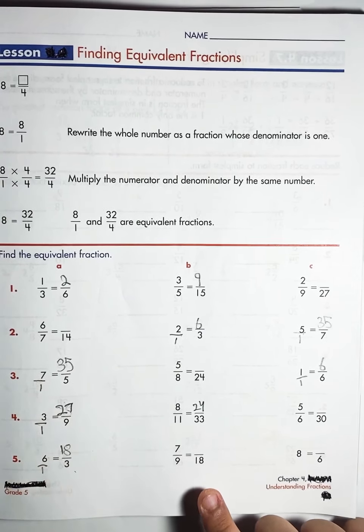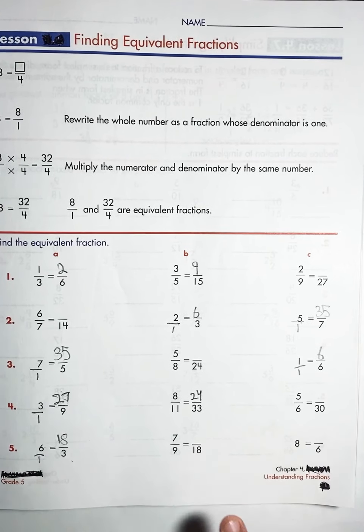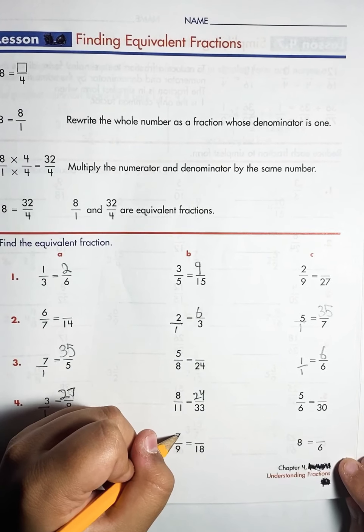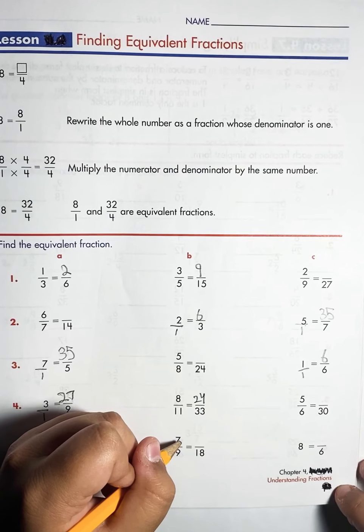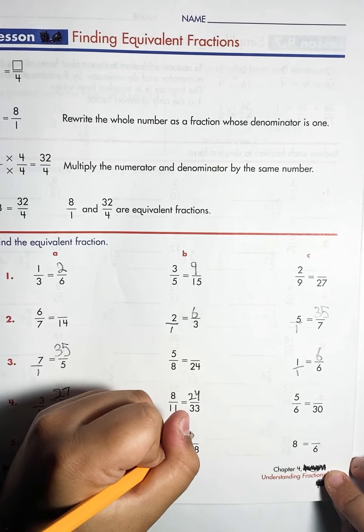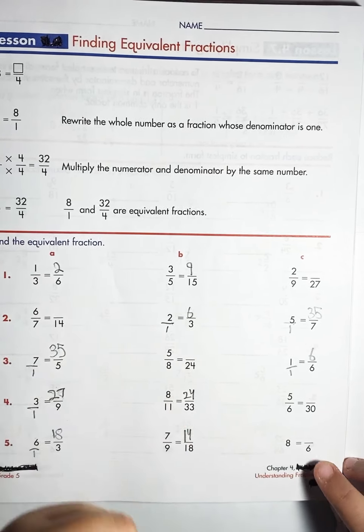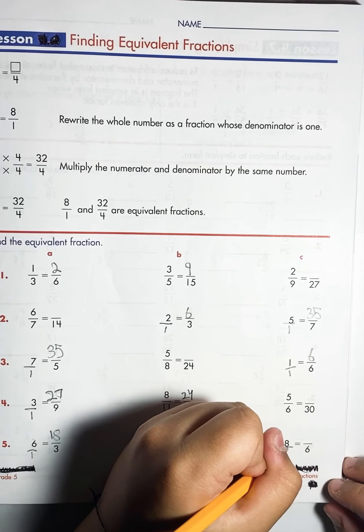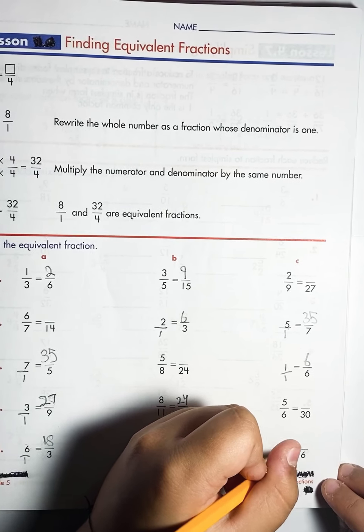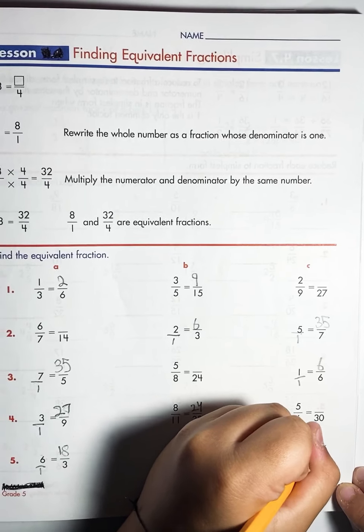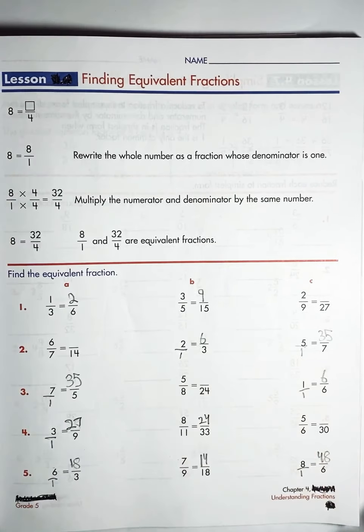And now to this one. Seven times two is fourteen. Now let's do the final one. Eight ones. So eight times six is forty-eight. Forty-eight over six.